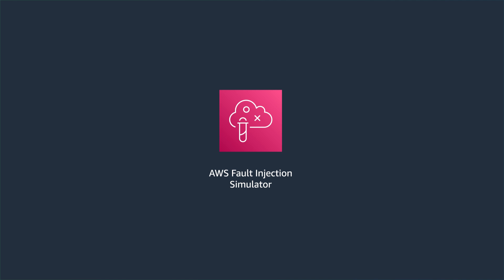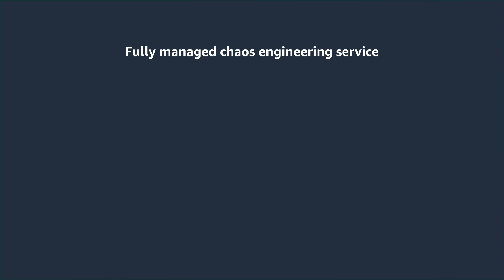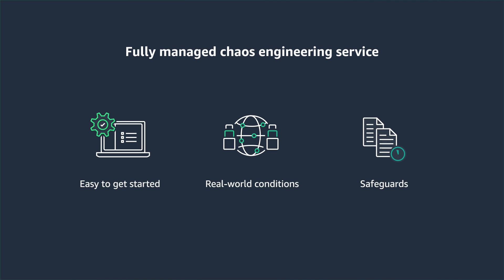With Fault Injection Simulator, or FIS, you set up and run experiments that help you create the real-world conditions needed to uncover application issues that can be difficult to find otherwise. AWS FIS provides templates that generate disruptions, and the controls and guardrails that you need to run experiments in your production environment.